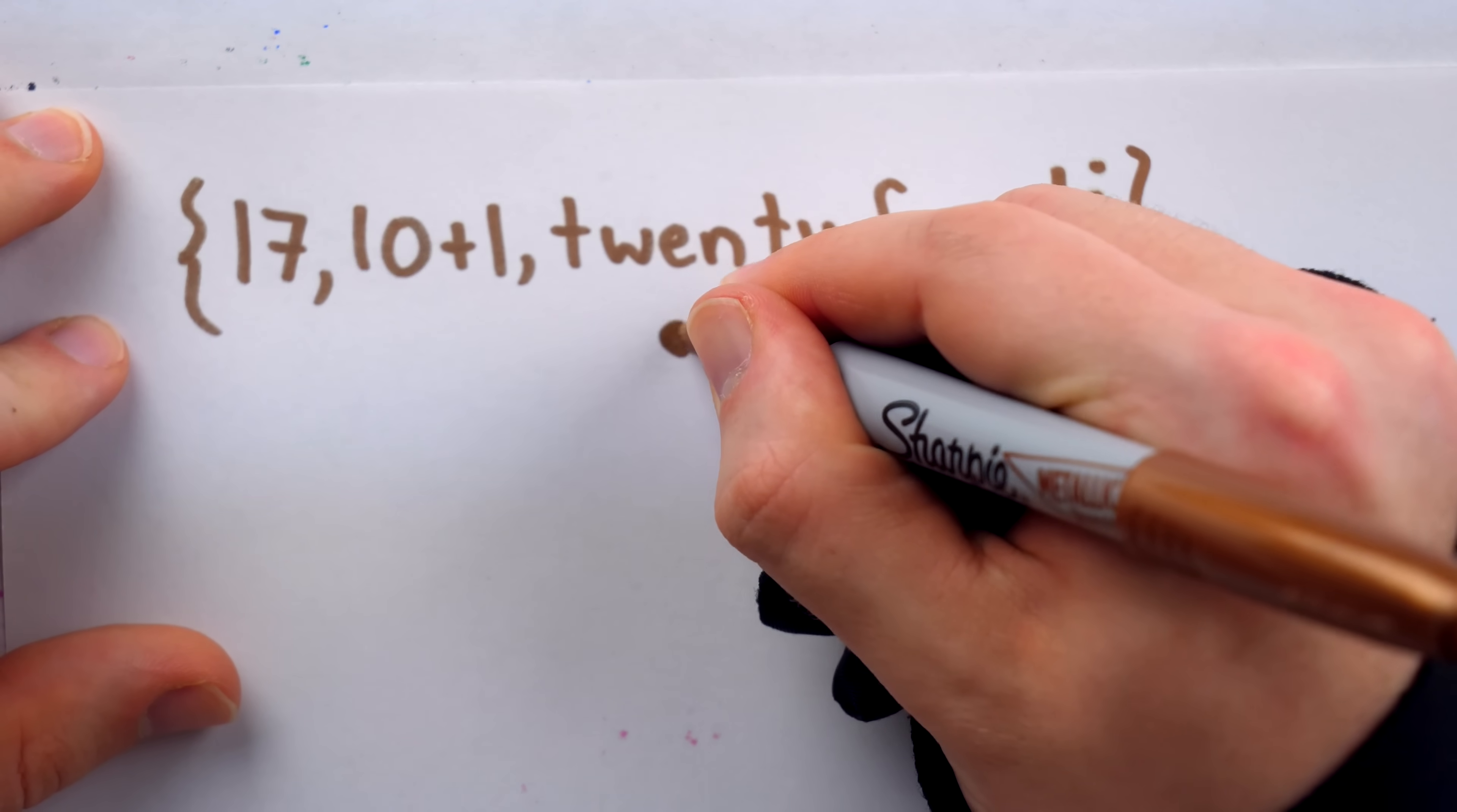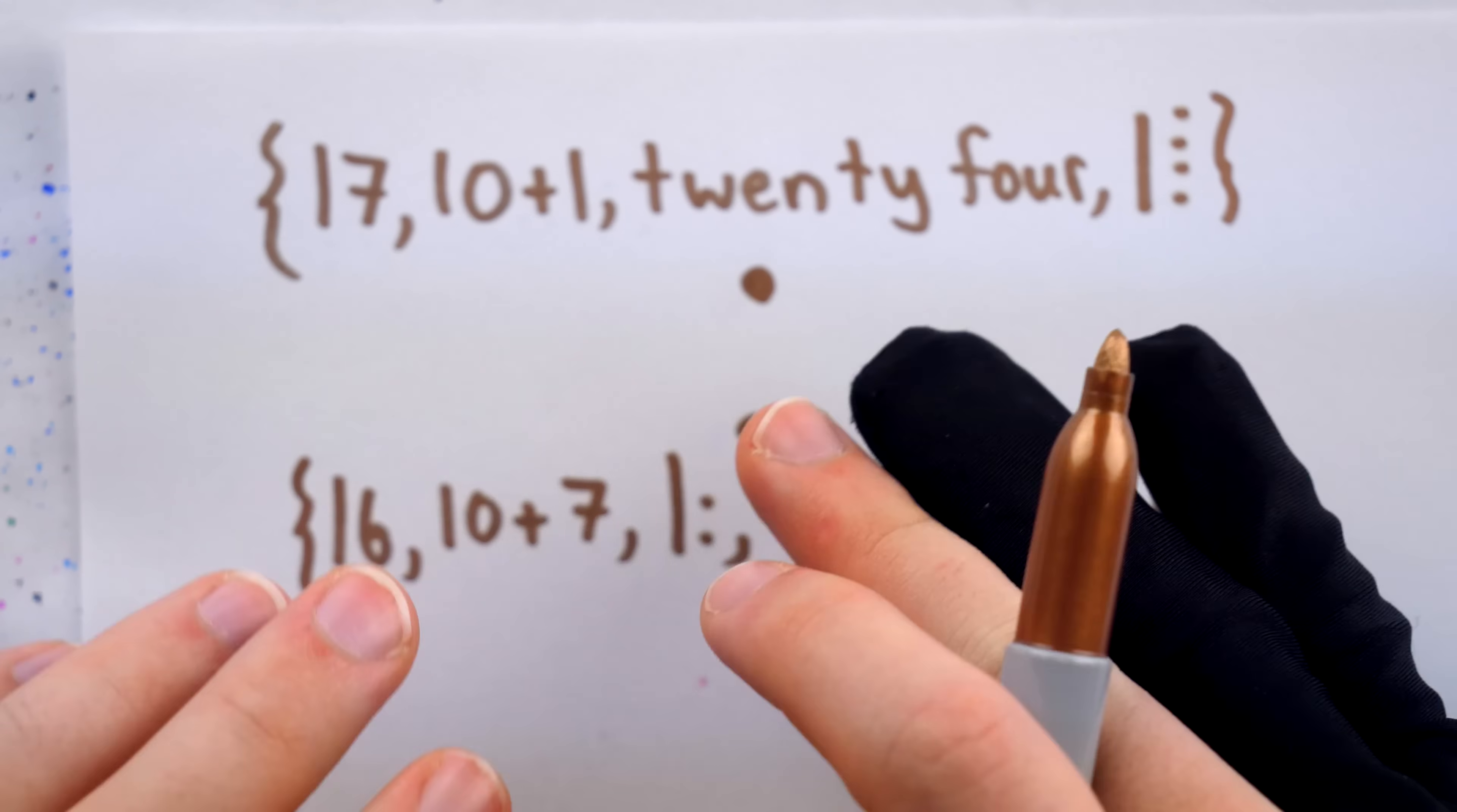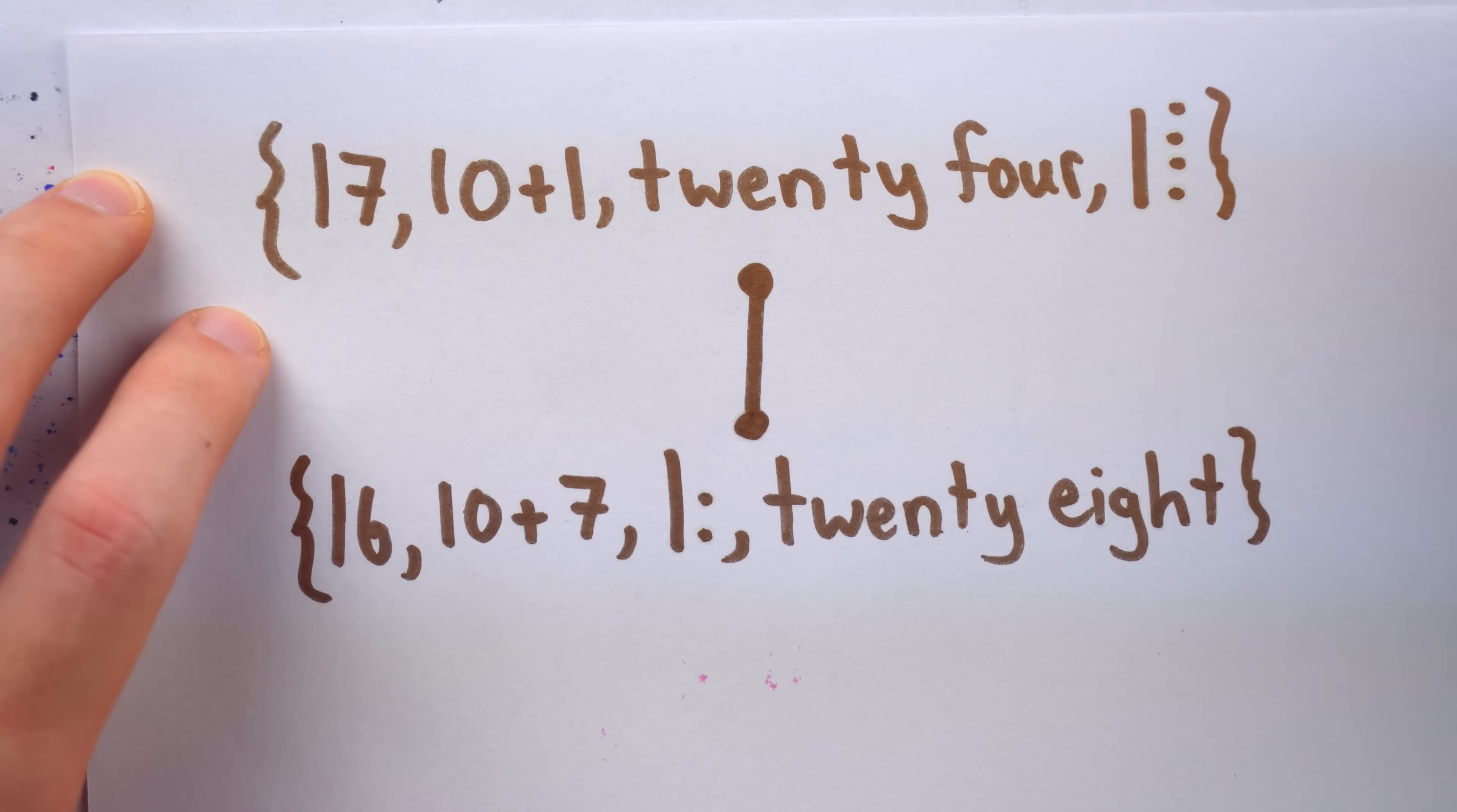This is what's represented by one vertex in this graph. Another vertex represents this box here. And these two vertices should be joined by an edge because they're related under the relation 'has a number in common with'. This set has a number in common with this set, and vice versa. They both have that number 17, so they could be joined by an edge.